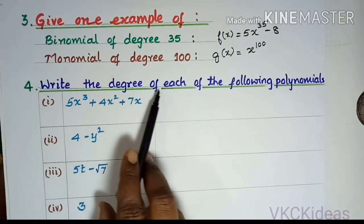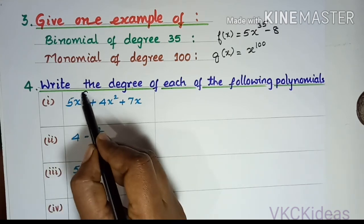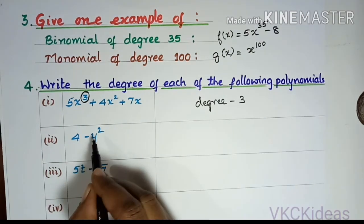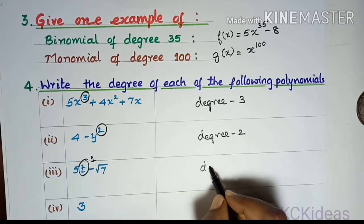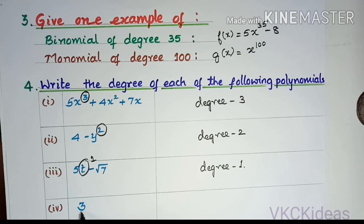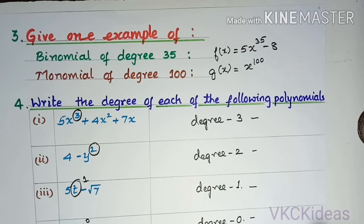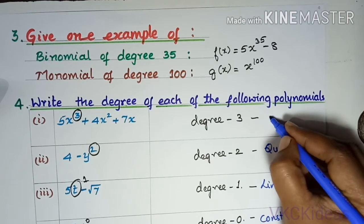Exercise 4: Write the degree of each of the following polynomials. For 5x³ + 4x² + 7x, the highest power is 3, so the degree is 3 — cubic polynomial. For the next, the highest power is 2, so the degree is 2 — quadratic polynomial. For the next, the highest power is 1, so the degree is 1 — linear polynomial. For a constant (no variable), we assume x⁰, so the degree is 0 — constant polynomial.